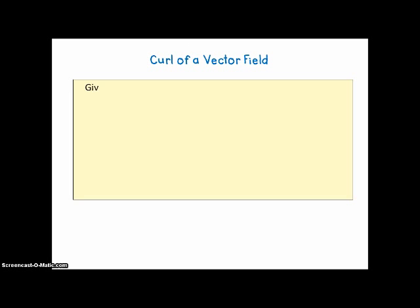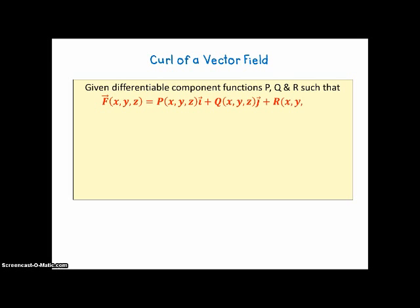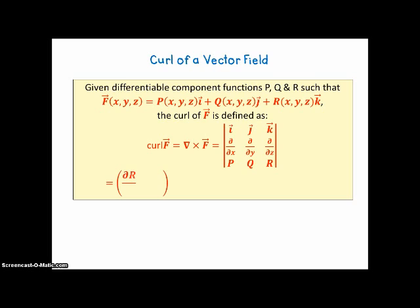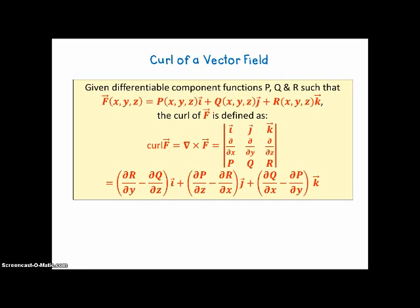Curl of a vector field. Given differentiable component functions P, Q, and R such that F = Pi + Qj + Rk, the curl of F is defined as the cross product of the partial-change operators crossed with the vector-valued function. Evaluating that determinant gives the formula. Again, just like in the dot product notation, this is slang notation — we're taking partial derivatives along the diagonals rather than multiplying, as shown in the examples.